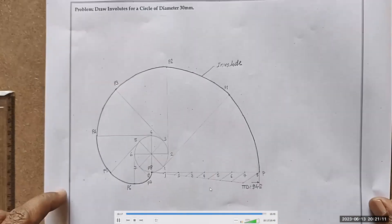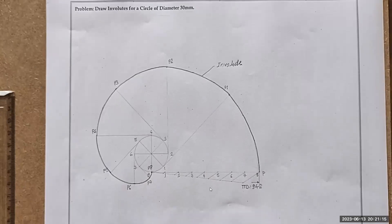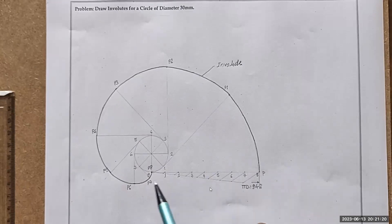So this is our problem — the involute for a circle where only the diameter is given. We assume the string length is equal to the circumference, that is 94.2mm, which comes from πd.